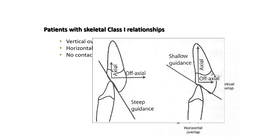The anterior teeth should have a normal relationship between the upper and lower overlap. This overlap — whether horizontal or vertical — exists between the two teeth.